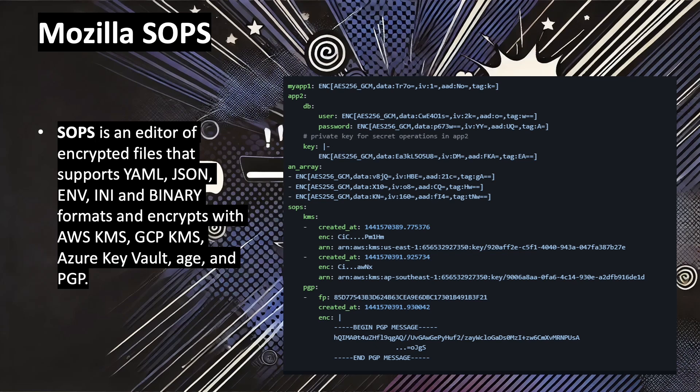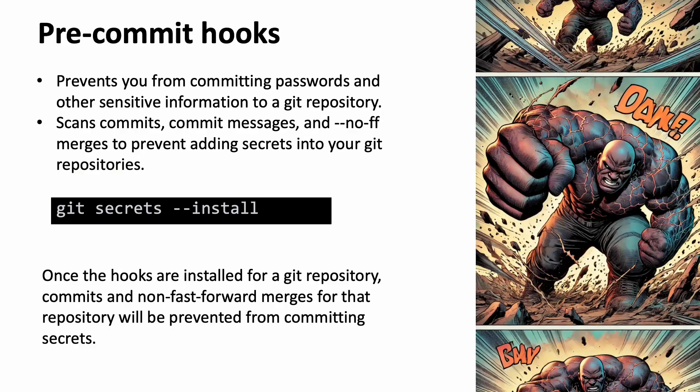Mozilla SOPS is an absolutely great solution — it's encryption for in-file content. If you have configuration files and you want to encrypt the data inside while still committing them to your code, SOPS is an editor of encrypted files that supports YAML, JSON, environment variables, and binary formats. It encrypts with AWS KMS, GCP KMS, Azure Key Vault, or PGP. You have many different ways to encrypt the data and get access by decrypting it inside the configuration file.